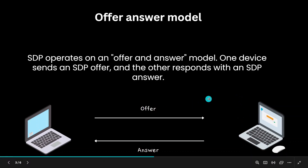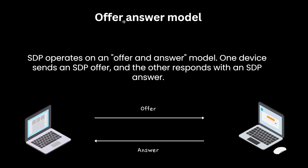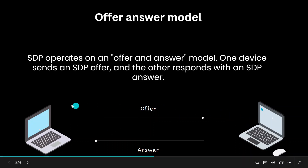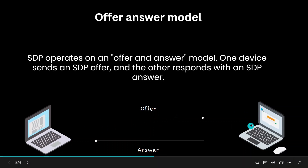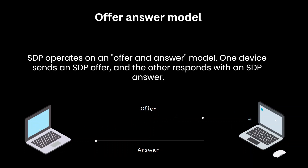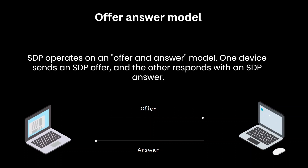To understand this in more detail: there is something called an offer-answer model. When two computers want to connect, the first computer offers the other some information — like the IP address, port, and protocol it can use. The second computer then gives its own offer, stating its capabilities and method of connecting. When both computers agree on a common method, the connection forms and a live direct peer-to-peer connection is established.